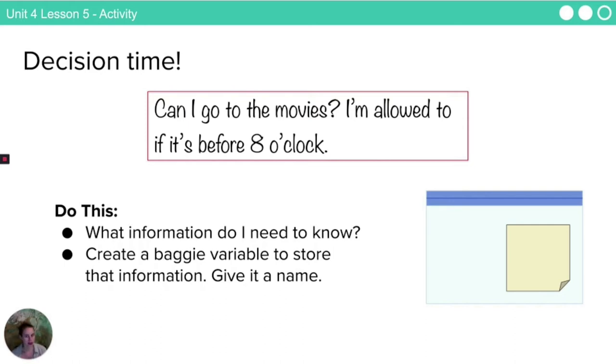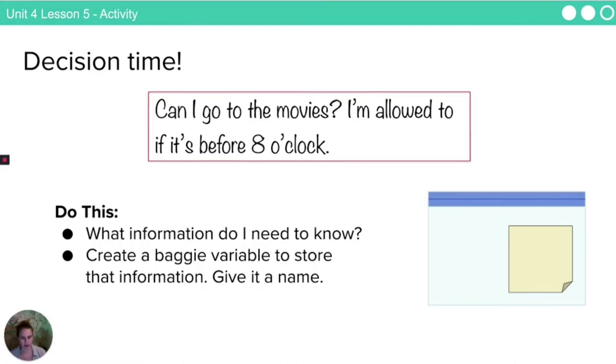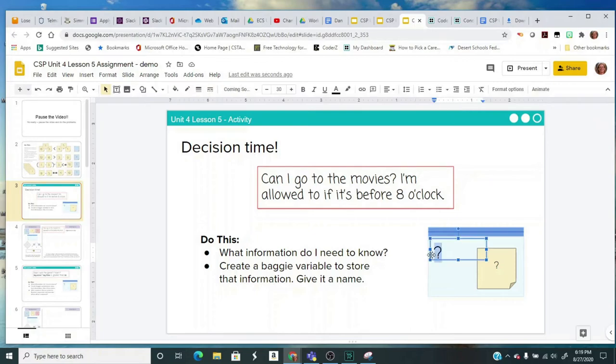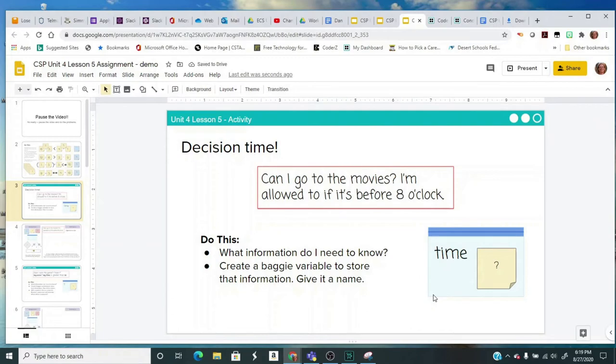Here, for example, is a statement. Can I go to the movies? I'm allowed to if it's before 8 o'clock. So pause for a moment with this video. What information do I need to know? Go ahead and create a baggie, a variable, and store that information. Give it a name. So on slide 3, here's your chance to think of the variable. If I want to go to the movies and it's allowed before 8 o'clock, then what information do I need? I need to know the time. So I'm going to take this baggie, this would be my variable, and I'm going to name it time. Do that on your third page.